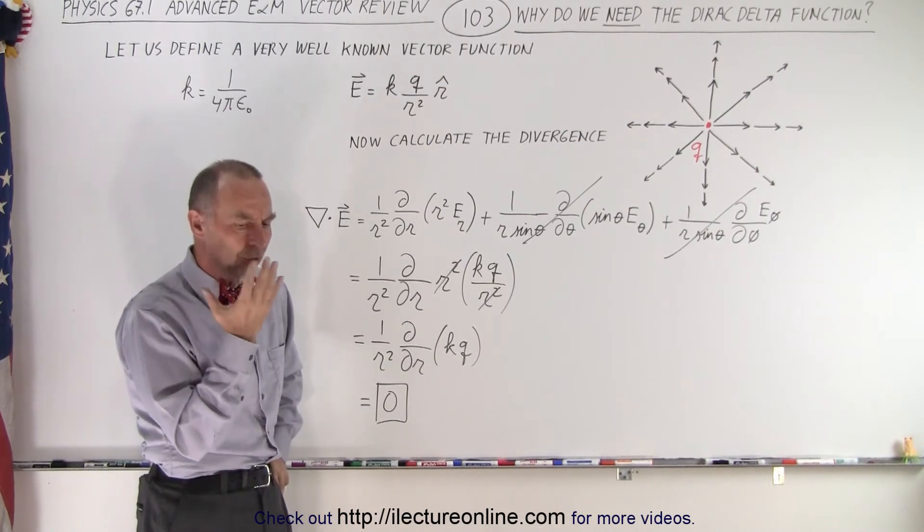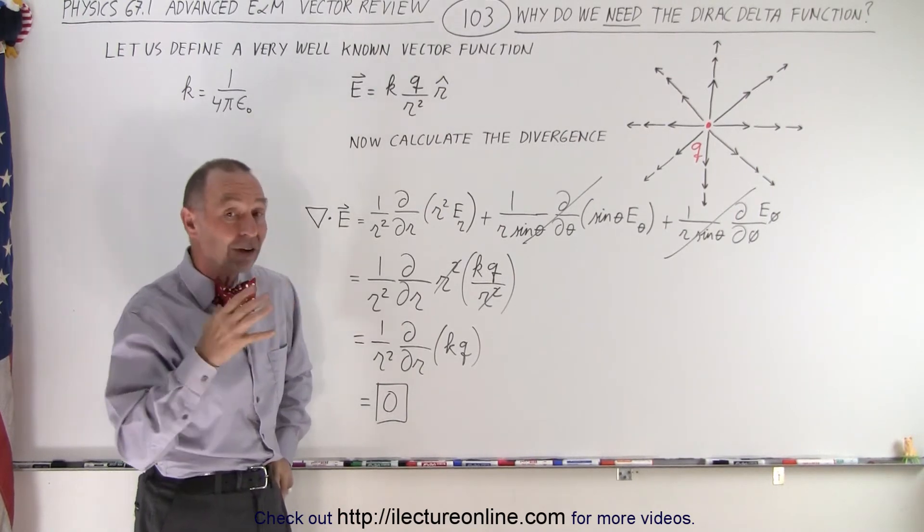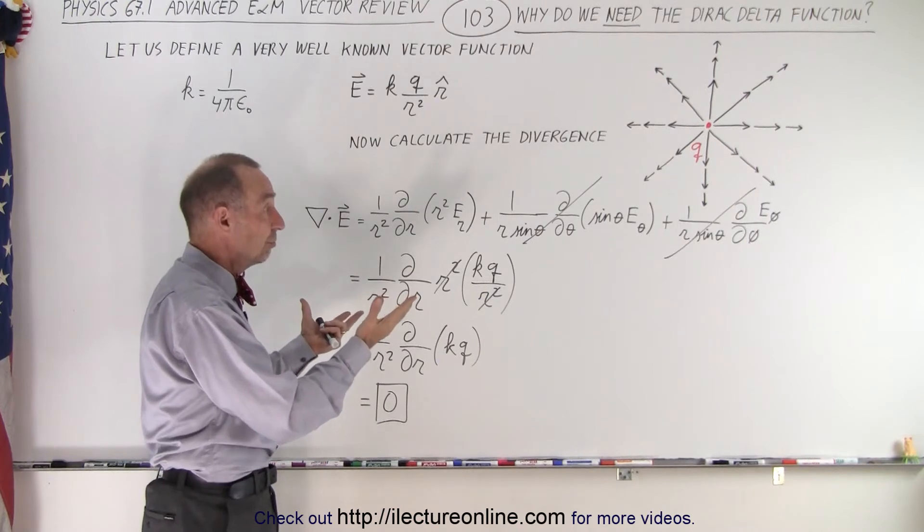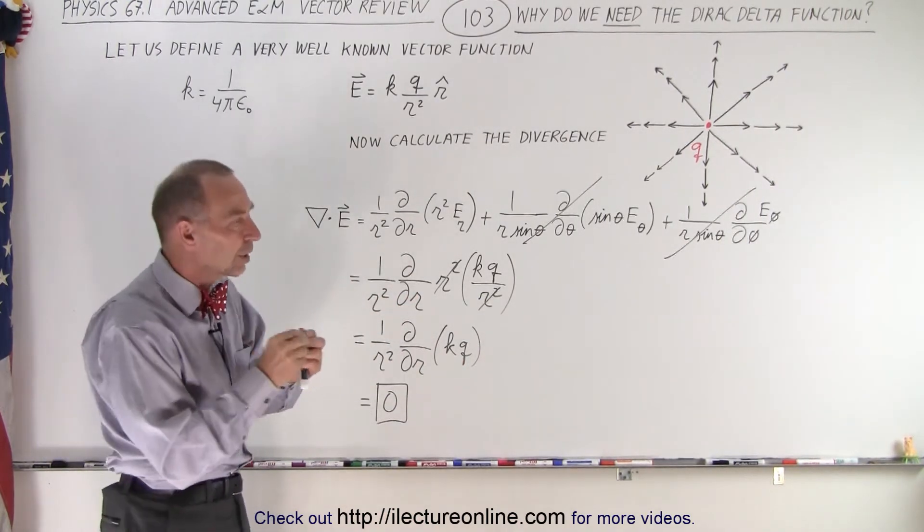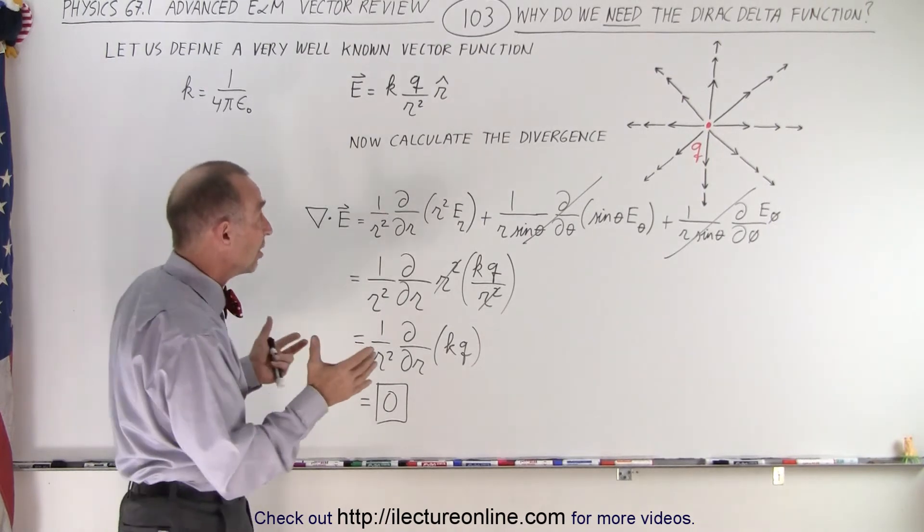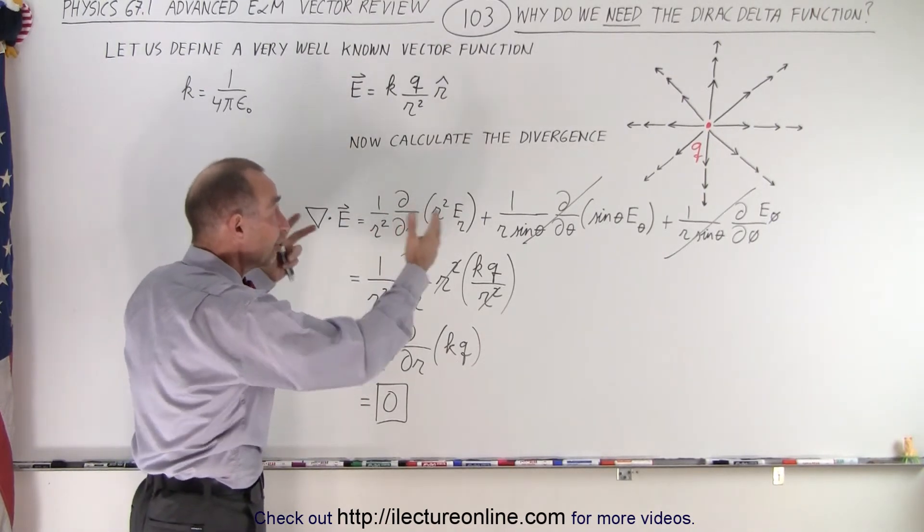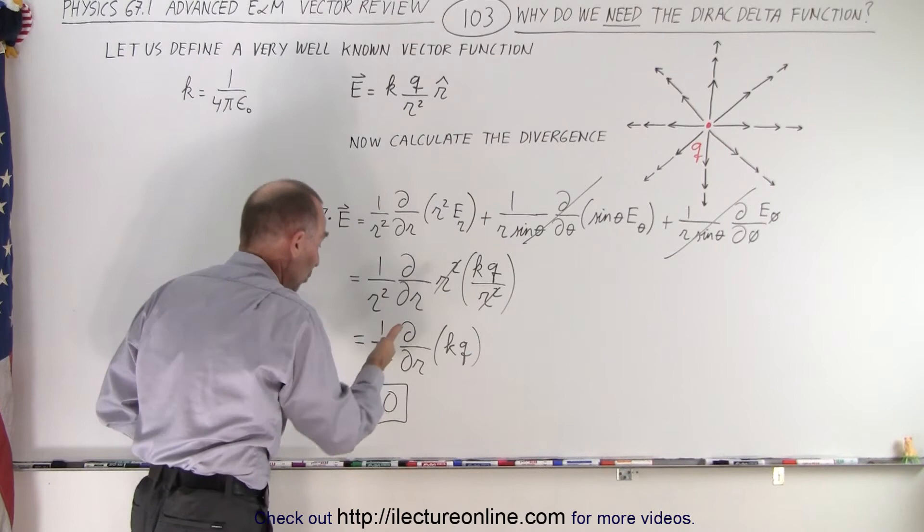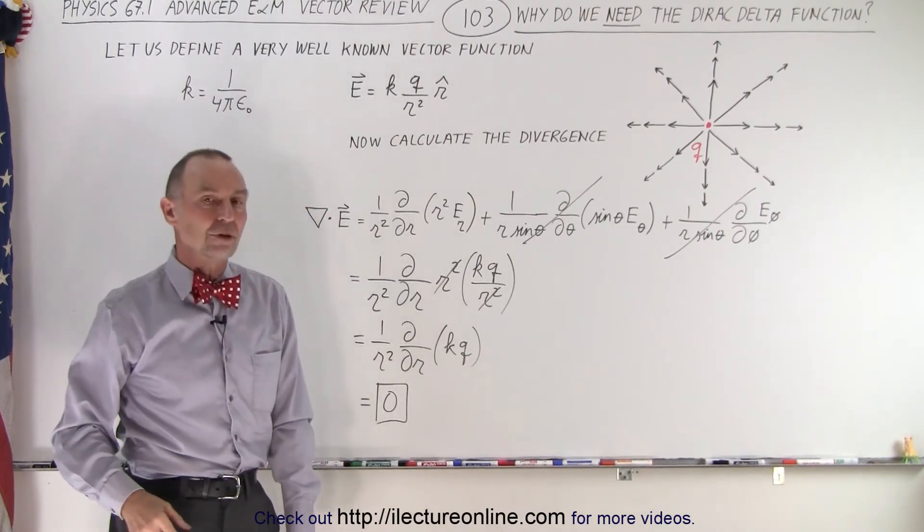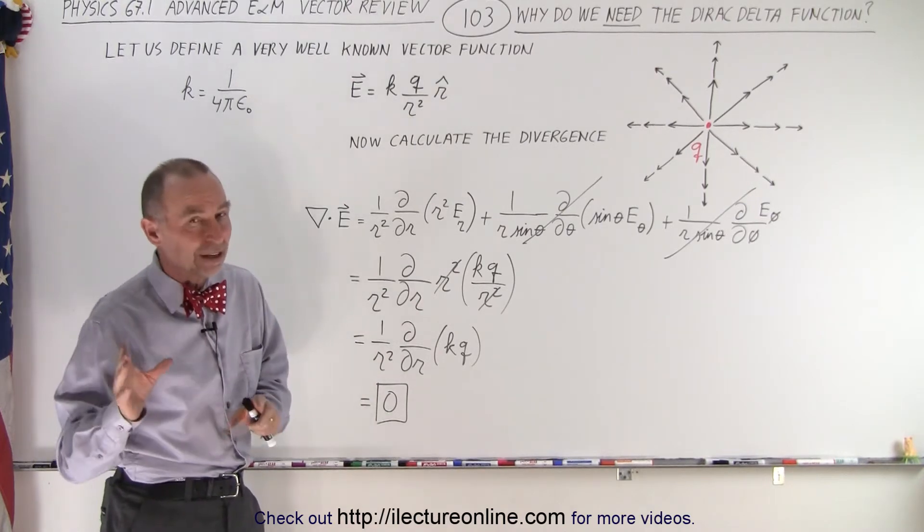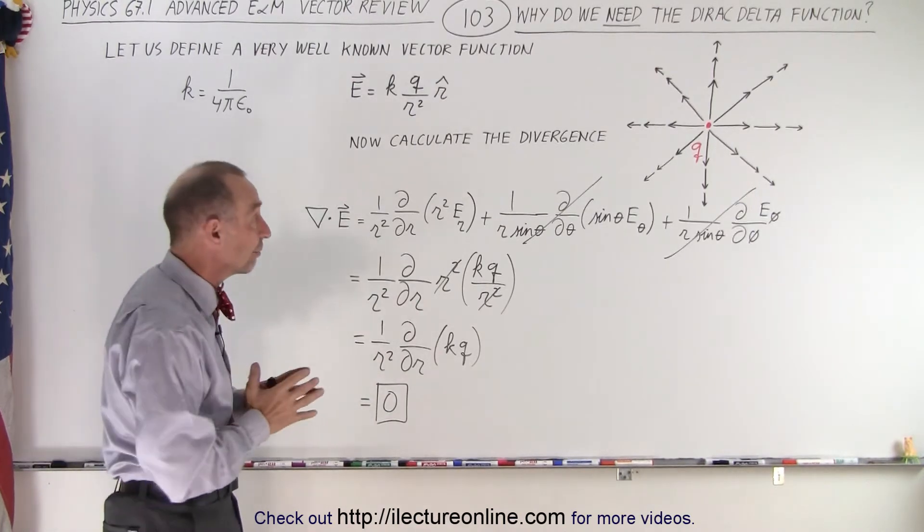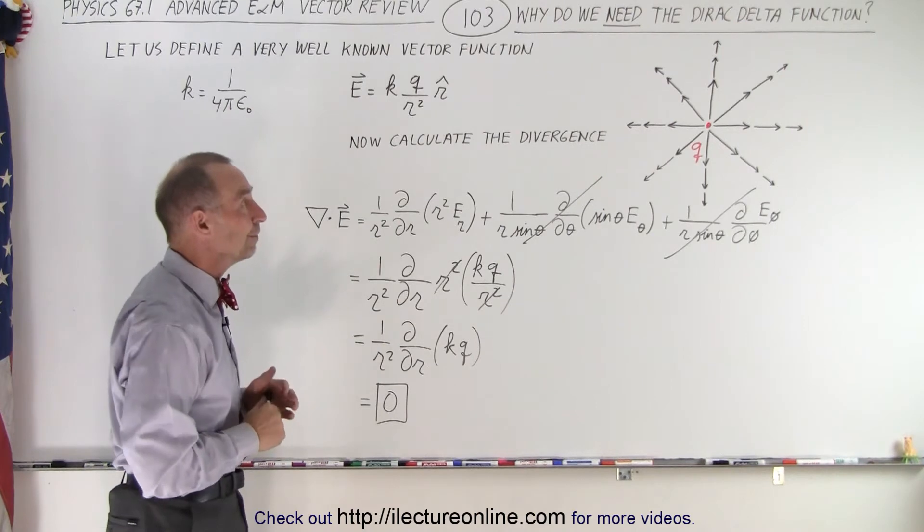Hmm. So there's something there that is very similar to a Dirac delta function. There's no definition of the charge until the radius becomes 0. And you can see that, unless we have some means of dealing with that situation, we don't get the proper answer for the divergence. So therefore, we need something, sounds like a Dirac delta function, in this case it will be a three-dimensional Dirac delta function, to help us solve this problem.